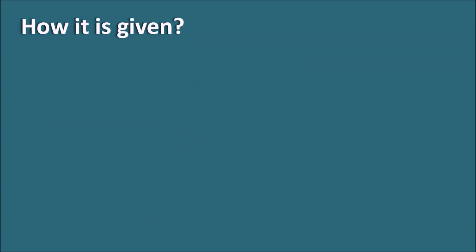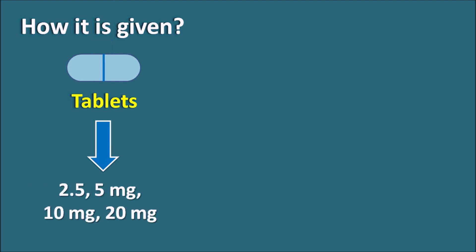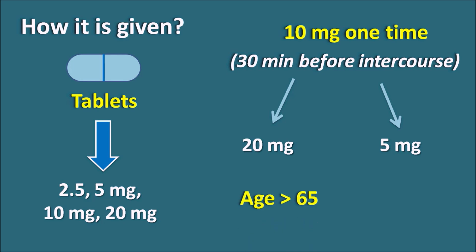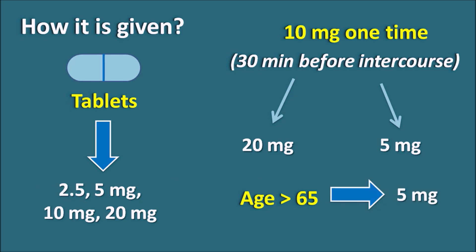How is it given? Vardenafil is available as tablets at doses of 2.5 mg, 5 mg, 10 mg, and 20 mg. The recommended dose is 10 mg once, and importantly this drug should be given 30 minutes before intercourse because maximum concentration is achieved between 30 to 60 minutes. The dose may be increased up to 20 mg or decreased to 5 mg in patients with hepatic impairment. In geriatric patients aged over 65, the starting dose is recommended at 5 mg, 30 minutes before intercourse.